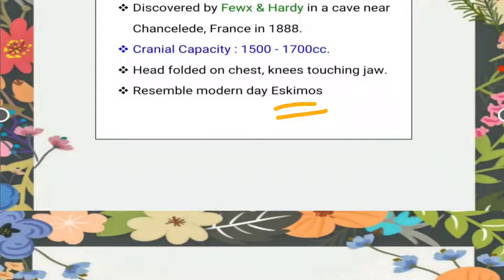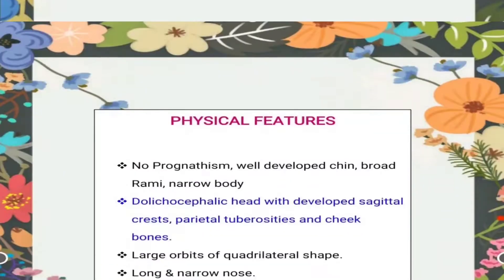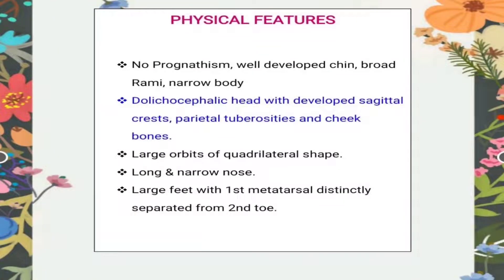It is said that the Chancelade man resembles the modern day Eskimos in their appearance and facial structure. Moving to the physical features, it is seen that they show no prognathism. Prognathism is simply the extension or bulging out of the lower jaw of the skull.